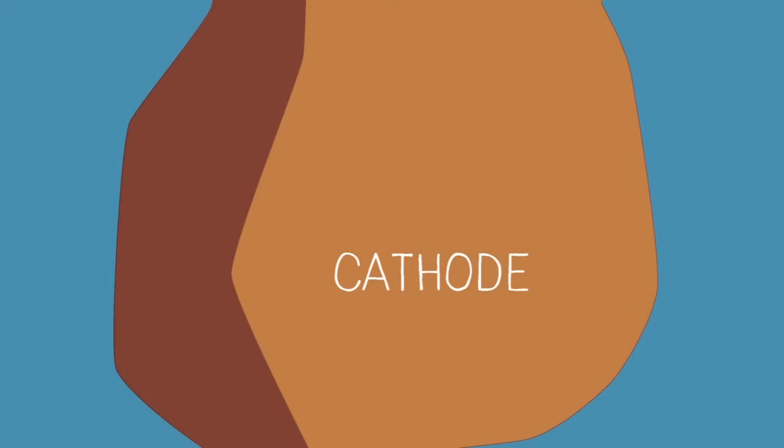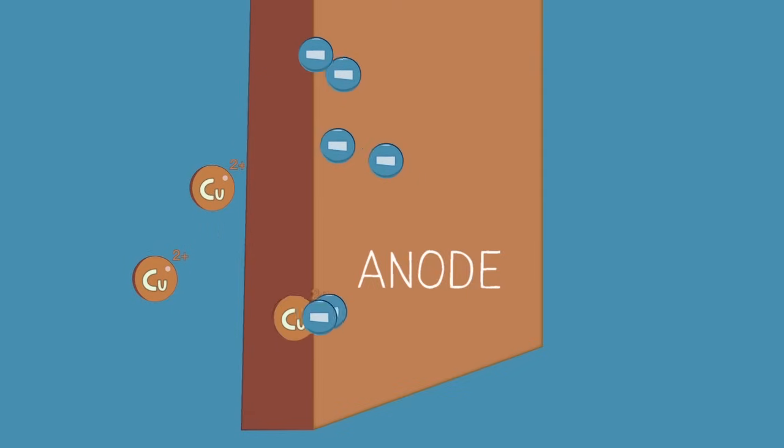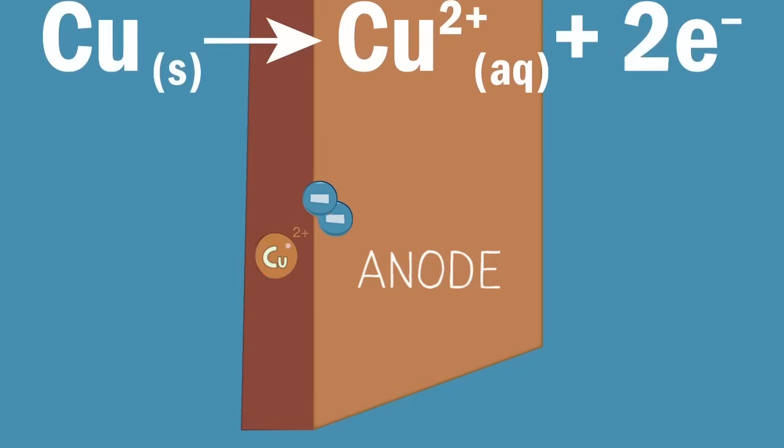Did you get it right? At the anode, copper metal goes into solution as copper 2 ions as shown by the equation.